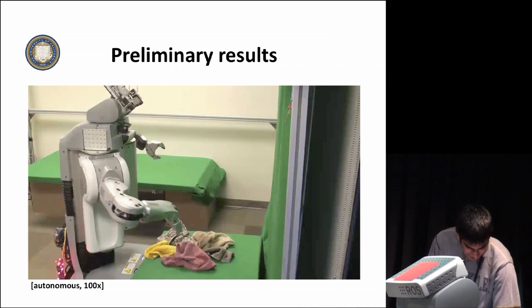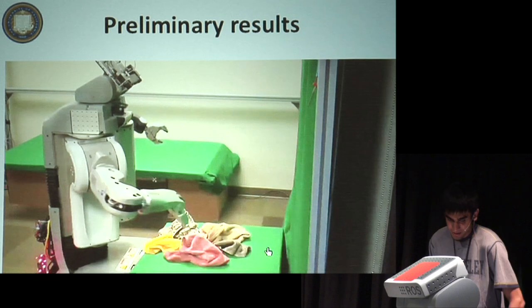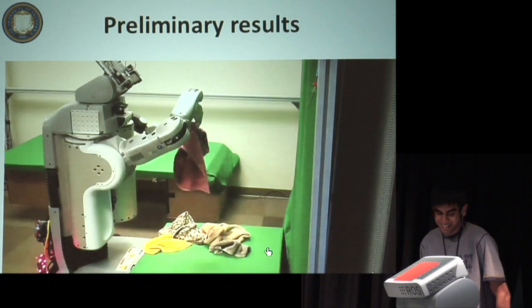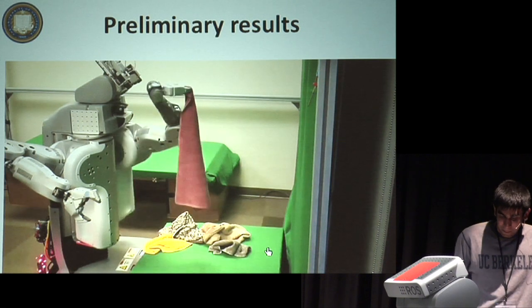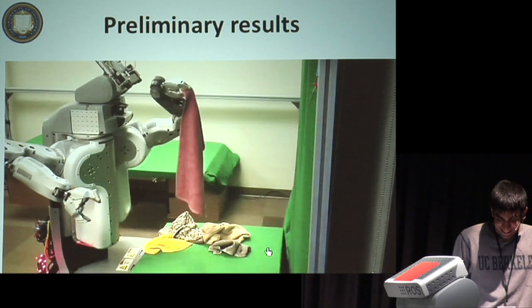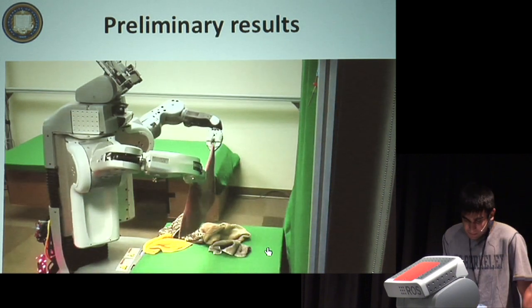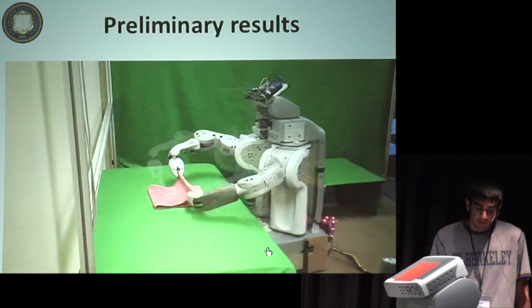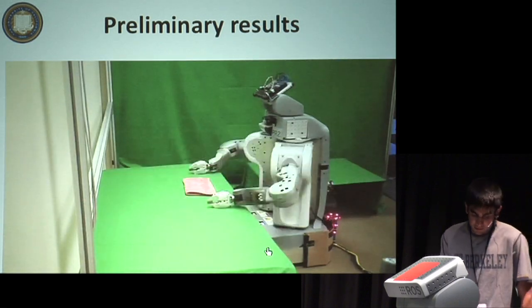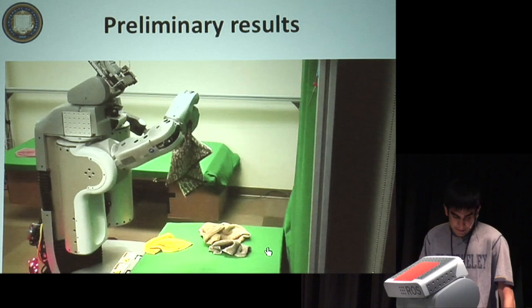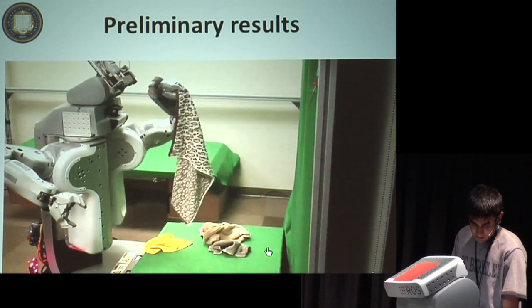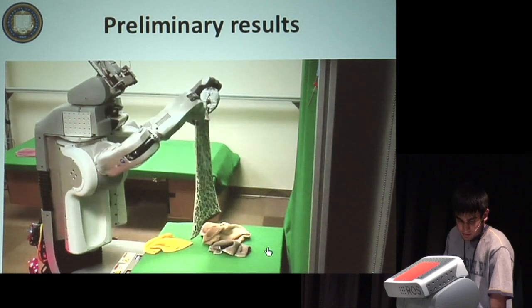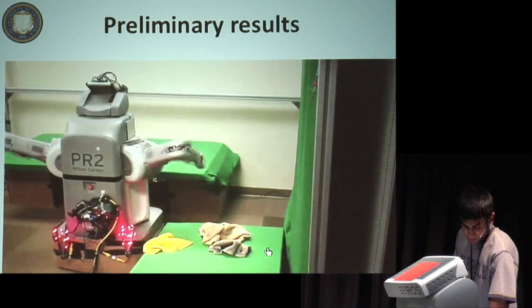Some of you may have seen this before, but here are some preliminary results of that. The video is sped up a hundred times. These are all unseen towels, and the robot can fold them all and put them in a stack.